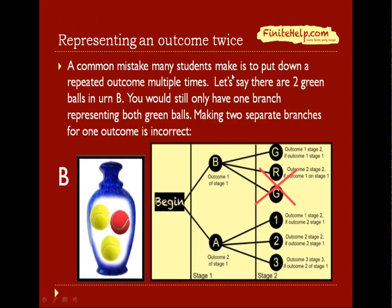A common mistake that many students make is to put down a repeated outcome multiple times. Let's say for urn B there were actually two green balls. When you draw the tree, you will still only make one branch for the green because it's only one possible outcome. Making two separate branches for one outcome would be incorrect, as shown here by this example.